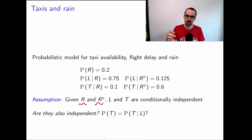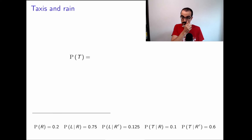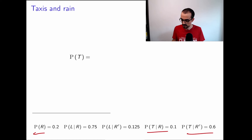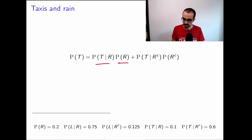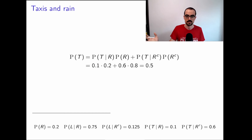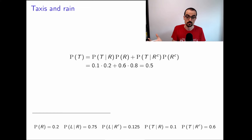Let's calculate rigorously. P(T) using the law of total probability: P(T|R)·P(R) + P(T|R̄)·P(R̄) = 0.5. That's the probability of finding a taxi — we've aggregated the conditional probabilities.